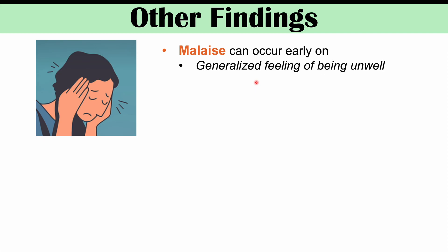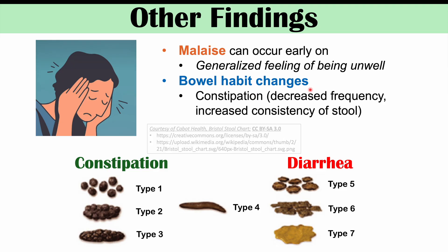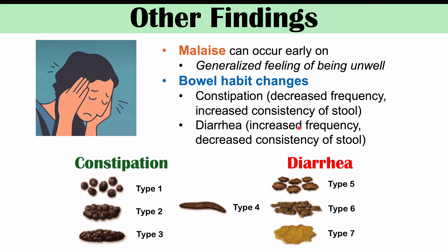Some other important findings of early appendicitis include malaise. Along with that periumbilical pain and loss of appetite, there can be a generalized feeling of being unwell. There can also be bowel habit changes in some patients — constipation, which is decreased frequency and increased consistency of stool, or diarrhea. Most commonly it's going to be constipation, because the inflamed appendix can lead to a slowing of peristaltic movements of the large intestine, slowing those muscular contractions and resulting in slower bowel movements.